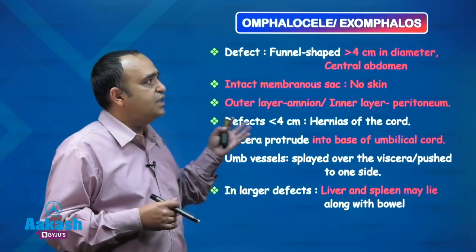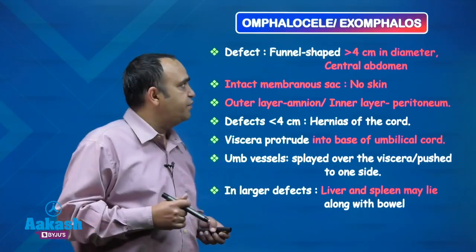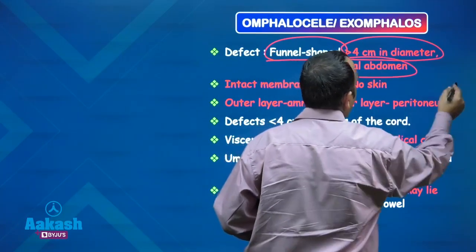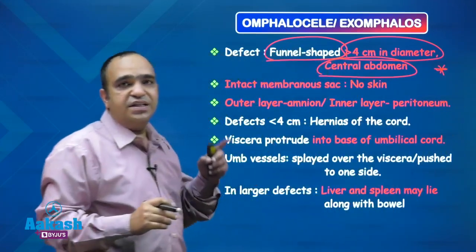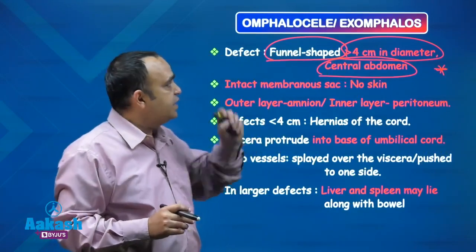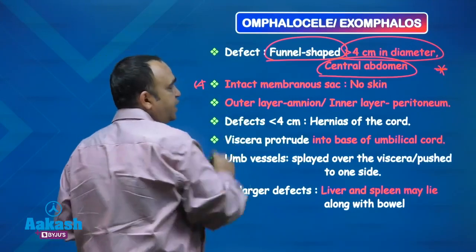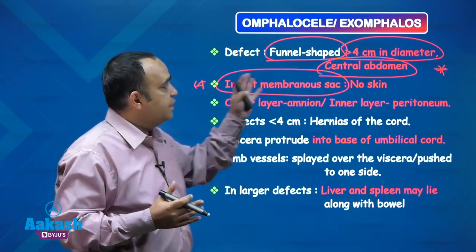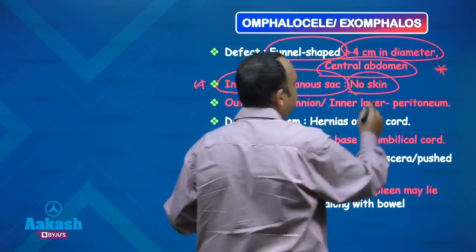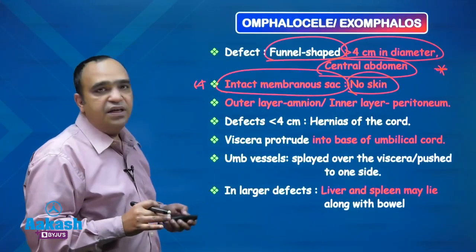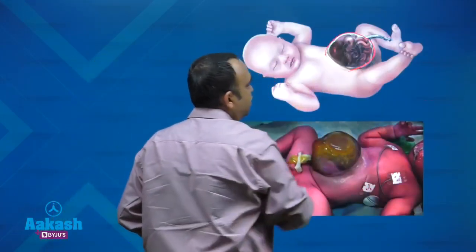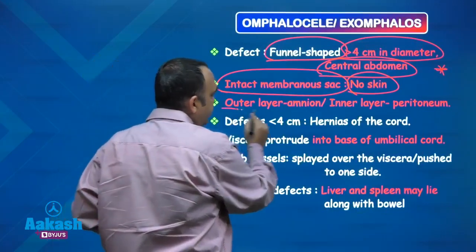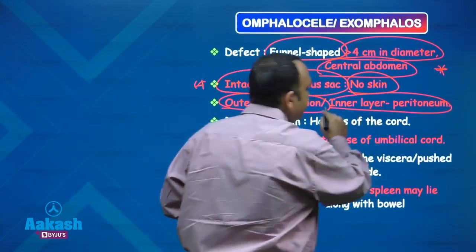Now we move on to the next condition: omphalocele, occasionally also known as exomphalos. The defect here is funnel-shaped, more than 4 centimeters, and central. In gastroschisis it was less than 4 centimeters and right of the umbilicus, but here the defect is central. Another point of difference: in gastroschisis the bowel was uncovered, but here the herniated viscera are covered with a membranous sac — not skin — composed of an outer layer of amnion and an inner layer of peritoneum.